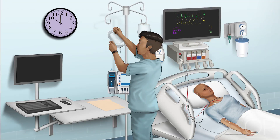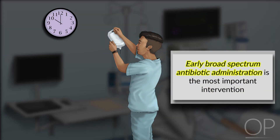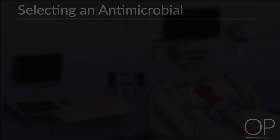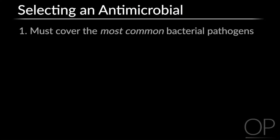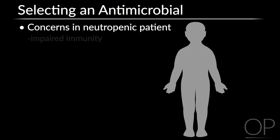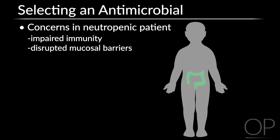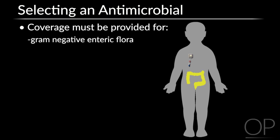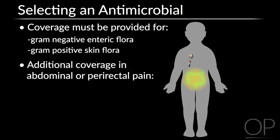The most important intervention for a patient with fever and neutropenia is early administration of broad-spectrum antibiotics. Our goal is to have antibiotics administered within one hour of fever detection. Different institutions use different empiric antibiotics, but the general principles of selecting antimicrobials are universal. Both the most common bacterial pathogens and the most dangerous pathogens must be covered. Antimicrobials should therefore provide coverage against gram-negative enteric flora, gram-positive skin flora, and in the case of abdominal pain or perirectal pain, consider additional coverage of anaerobic enteric organisms.